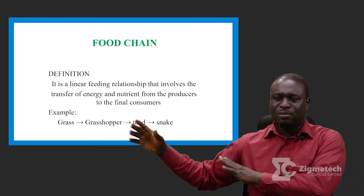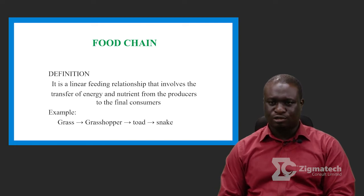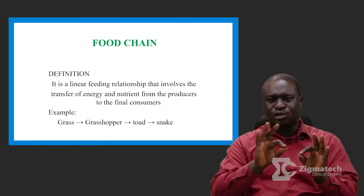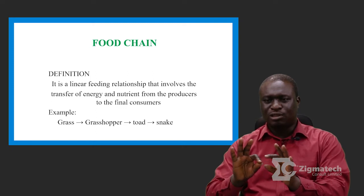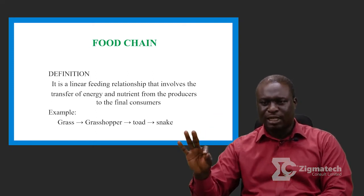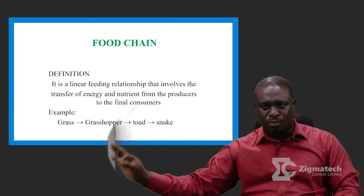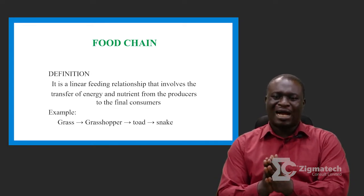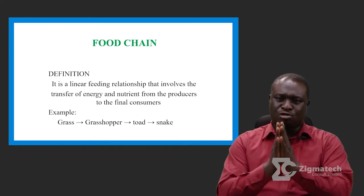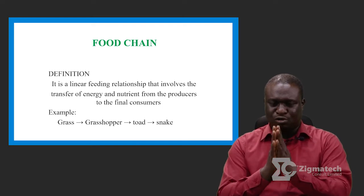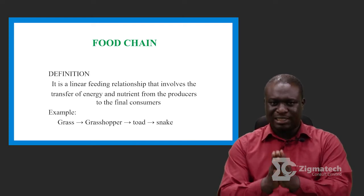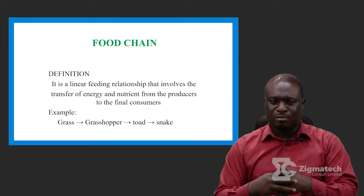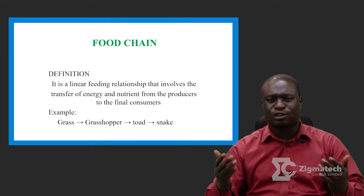In an ecosystem we have what we call a source, and the source produces energy for producers. From producers it gets to primary consumers, secondary consumers, tertiary consumers, and ends with a decomposer. In terms of a food chain example, it begins with a producer — grass is a producer. Green plants are producers; they manufacture their own food. Grass can manufacture its own food by trapping energy from the sun, so the sun is seen as the ultimate source of energy.